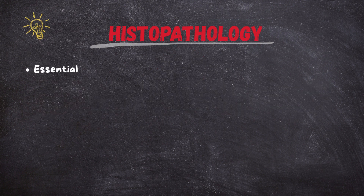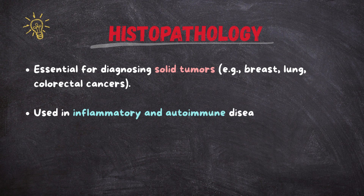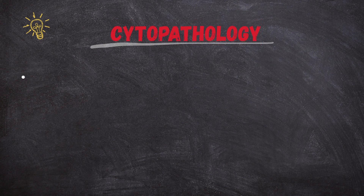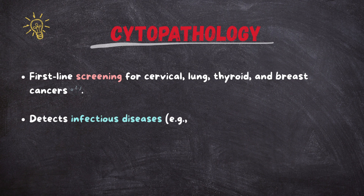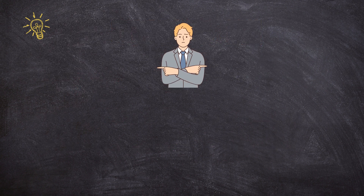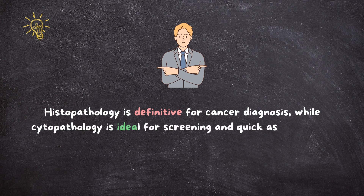Histopathology is essential for diagnosing solid tumors such as breast, lung, and colorectal cancers, is used in inflammatory and autoimmune disease diagnosis, and determines the stage and grade of cancers. Cytopathology serves as a first-line screening for cervical, lung, thyroid, and breast cancers, detects infectious diseases such as tuberculosis and fungal infections, and is useful for early cancer detection and rapid evaluation. Key difference: histopathology is definitive for cancer diagnosis while cytopathology is ideal for screening and quick assessments.